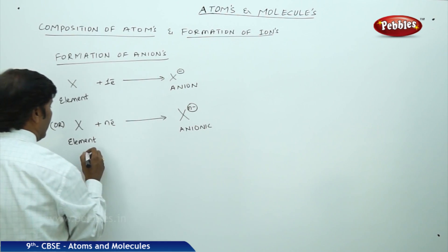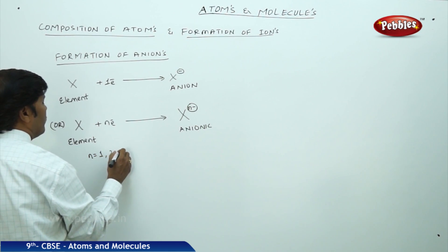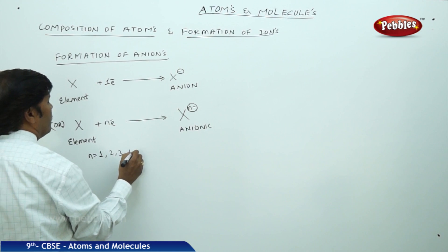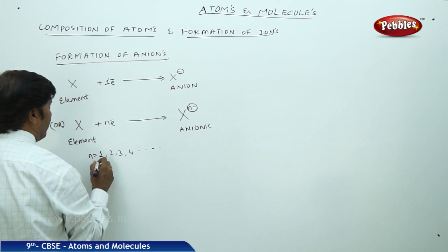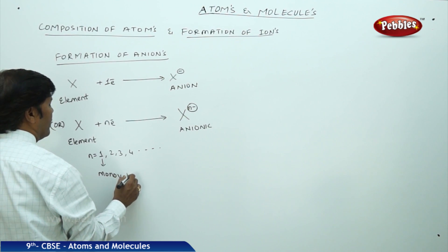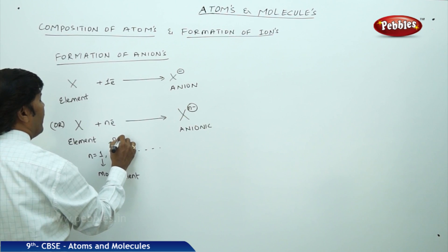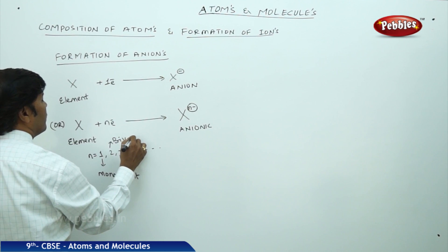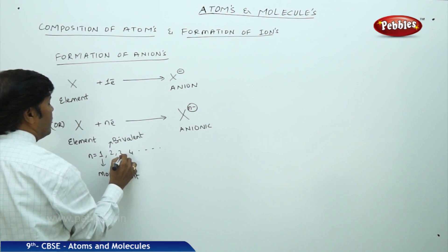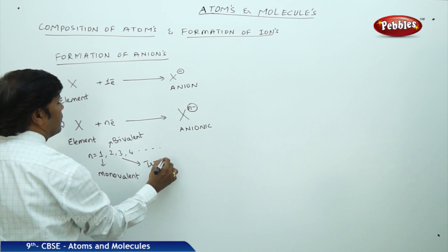The value of n can be 1, 2, 3, 4, and so on. If n is 1, it is monovalent; if n is 2, it is bivalent; if n is 3, it is trivalent, and so on.